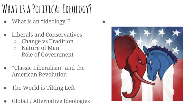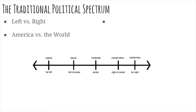Tomorrow we'll talk a little bit more about global and alternative ideologies outside of America. Today, to keep things simple, we're going to focus just on America. So oftentimes you hear about liberals being on the left and conservatives being on the right, or the Democratic Party being a left party and the Republican Party being a right party.